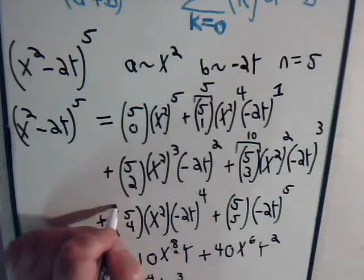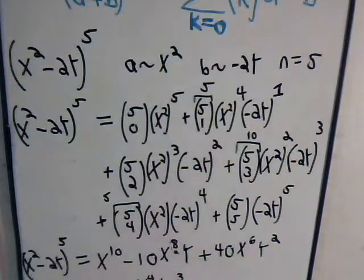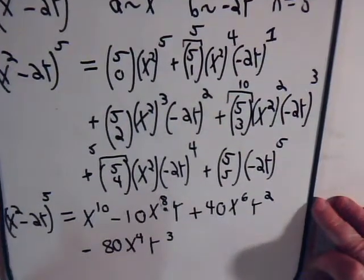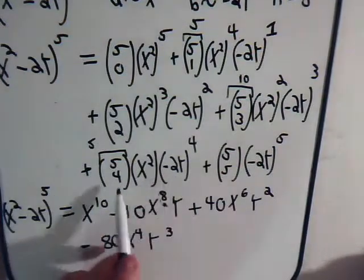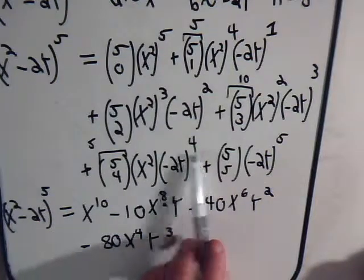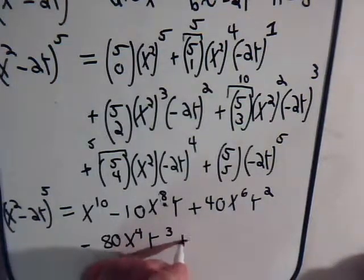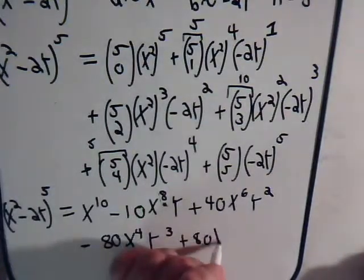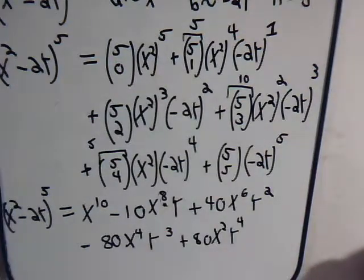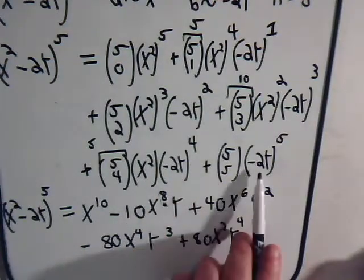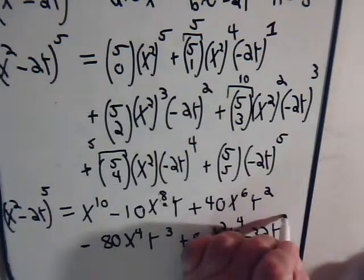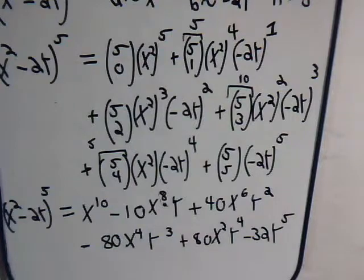This right here, this binomial coefficient, that's just 5. Let's keep things in focus as we move along here. We're up to this term now. This is 5. Here we have minus 2 to the fourth, that's plus 16 times 5 is 80 times x squared times y to the fourth. And finally, this is 1. This is going to be minus 32 times y to the fifth. And there it is.